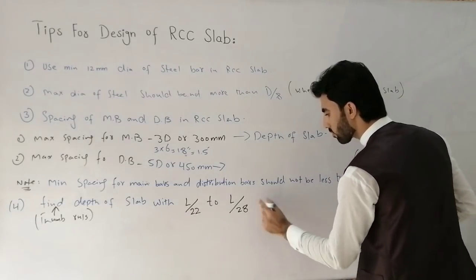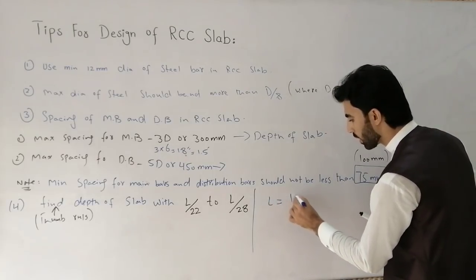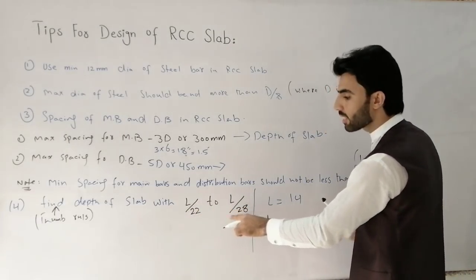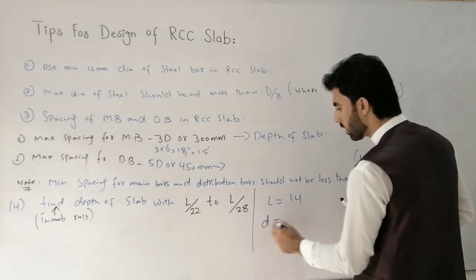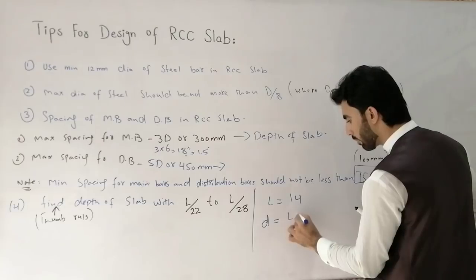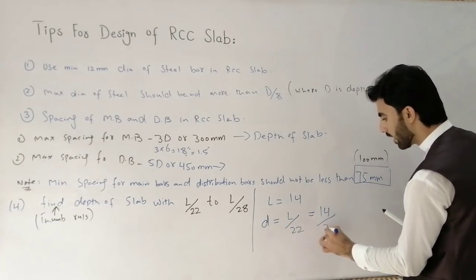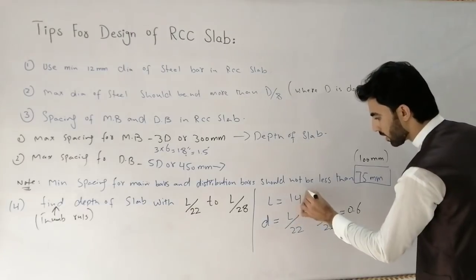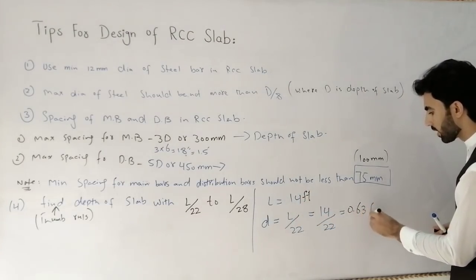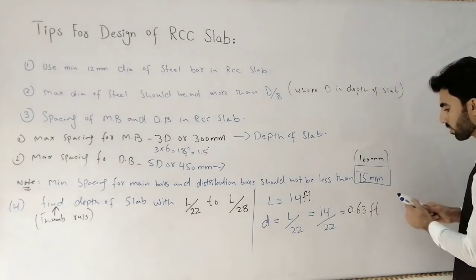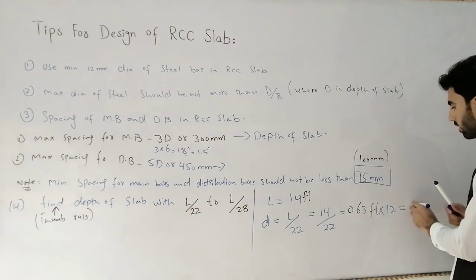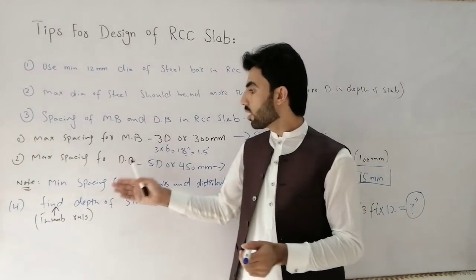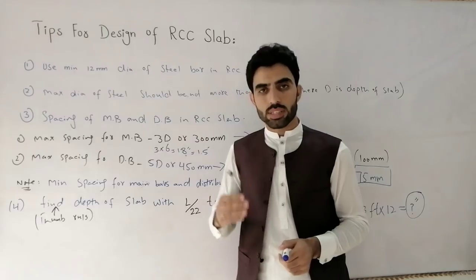For example, if the slab length L is 14 feet, using the formula L divided by 22: 14 divided by 22 equals 0.63 feet. Multiply by 12 to convert to inches, and this gives you the thickness of the slab in inches. This is the method to find depth of slab using the thumb rule.